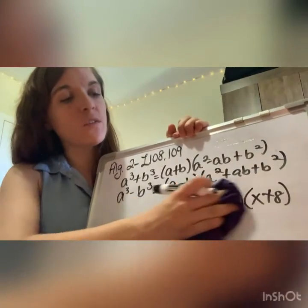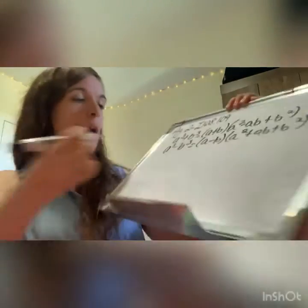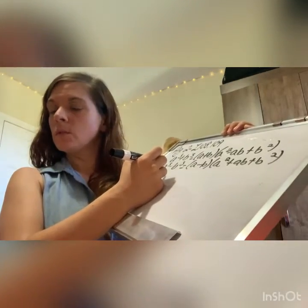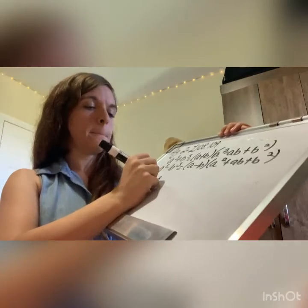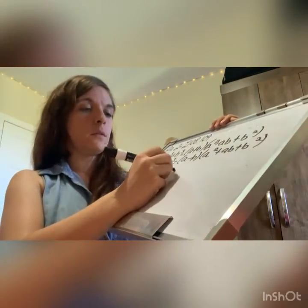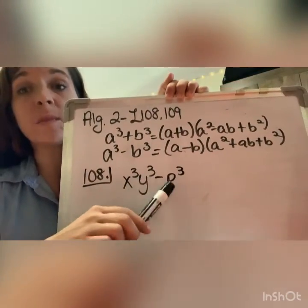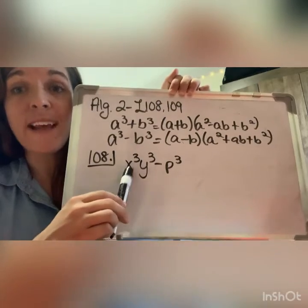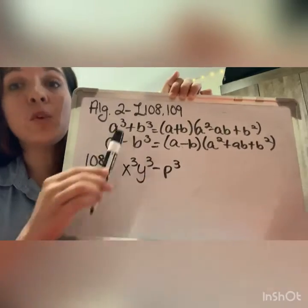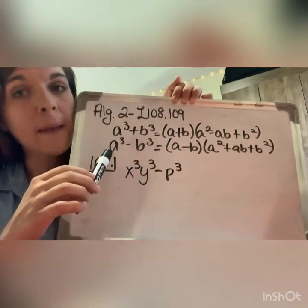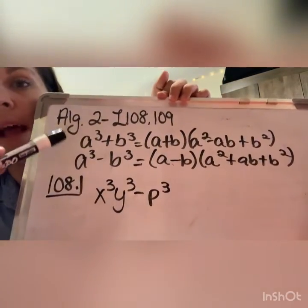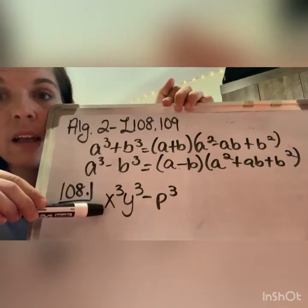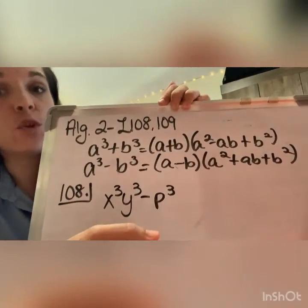So it's the same thing with the difference of cubes. Let's look at example one and I'll show you how these formulas work. x to the third, y to the third minus p to the third. If you can recognize that you can take the cube root of this one, which is xy, and take the cube root of p to the third, that's p, then you can use the sum or difference of cubes formula, and you just decide which equation is appropriate.